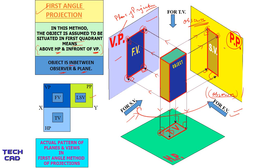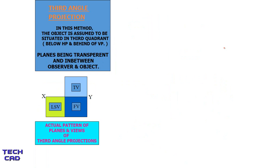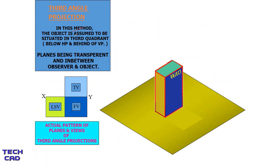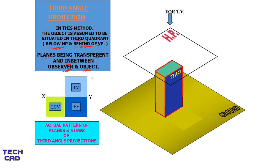Now we will see the orthographic projection of the same object in third angle projection. In this method, the object is assumed to be in the third quadrant — below HP and behind VP. The plane being transparent is in between the observer and the object — this is very important to remember. This is the key difference: in first angle the object is between observer and plane, whereas in third angle the plane is between observer and object.